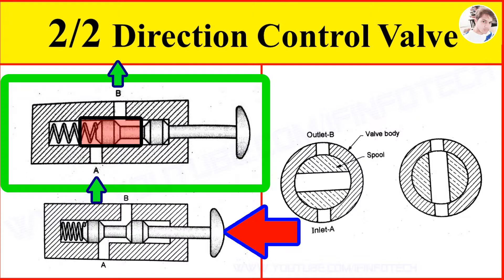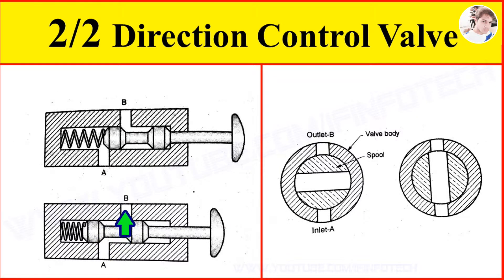When the push button is pressed, spool moves to open the passage from port A to port B. And hence, oil flows from port A to port B. Next is the rotary spool type 2x2 Direction Control Valve.